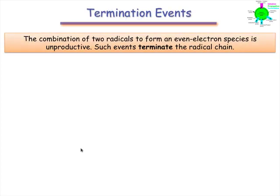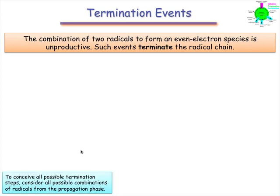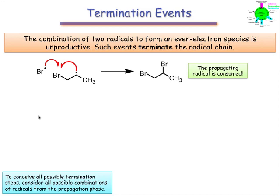Any two radical intermediates from the propagation stage may combine in a conceivable termination step. In this first example, Br• combines with the product of addition of Br-radical to the alkene, yielding halogenated product. Because they reacted with each other, both radicals are removed from the cycle of propagation by this step.